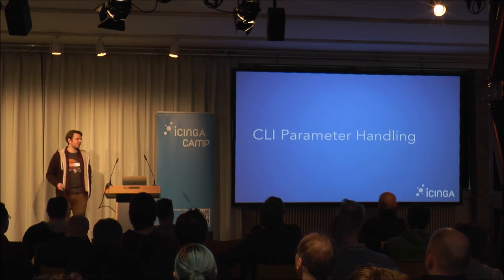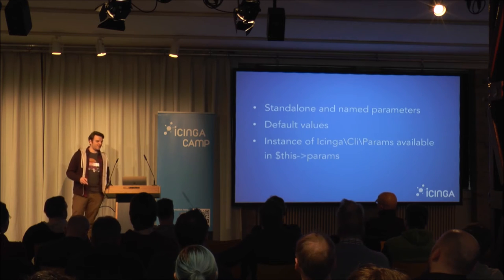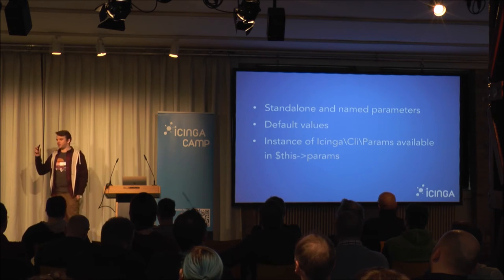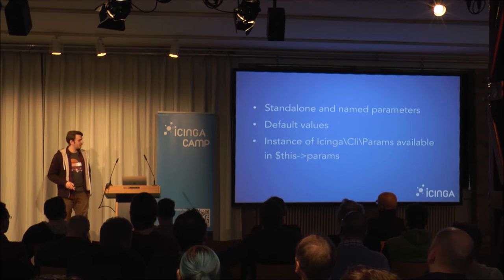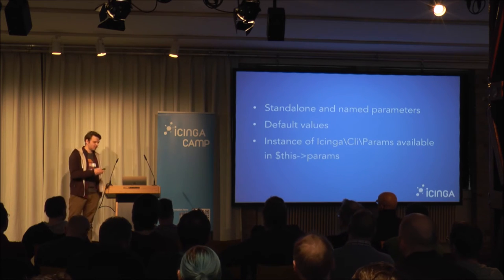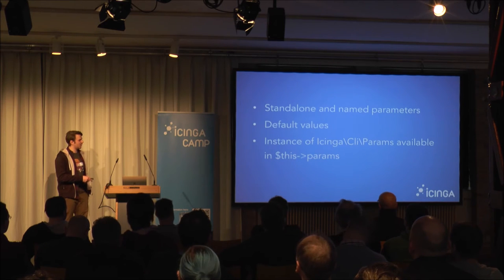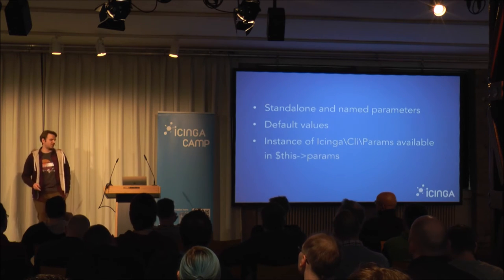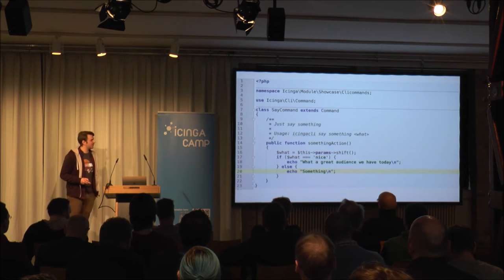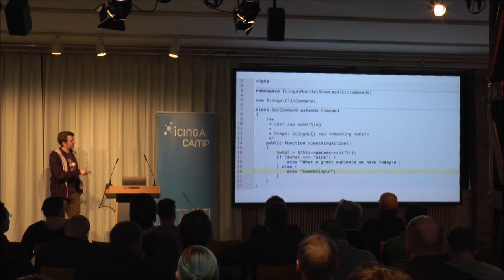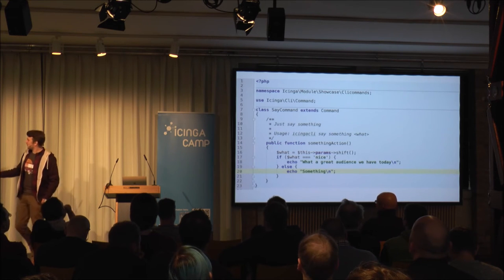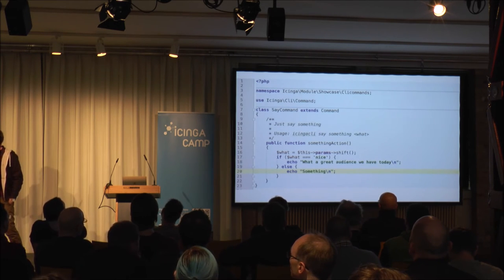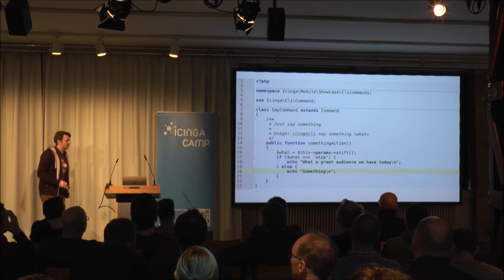A CLI command is nothing without good parameter handling. We have standalone and named parameters in the CLI. In our code, if an option is not given we can have default values. The params object for handling parameters is always accessed via $this->params. We extend our documentation — we now say 'icinga-cli say something WHAT' — and we use the params object and shift the parameter because it's a standalone parameter with no name. If we want to say something nice, we print it.